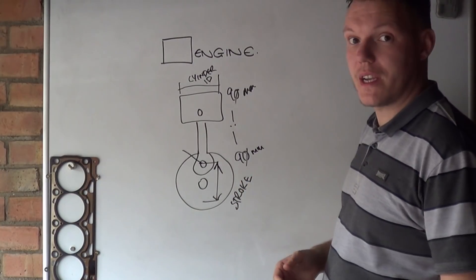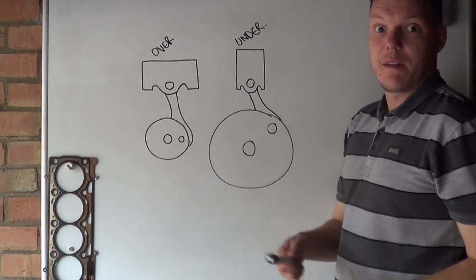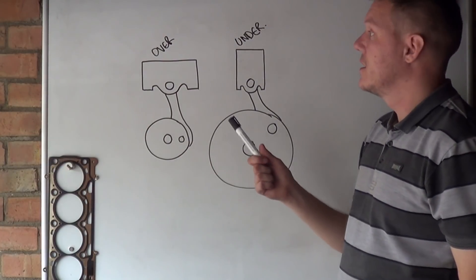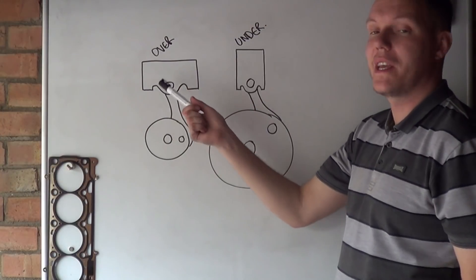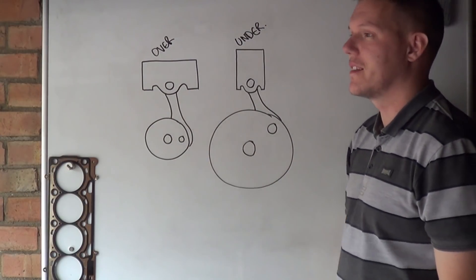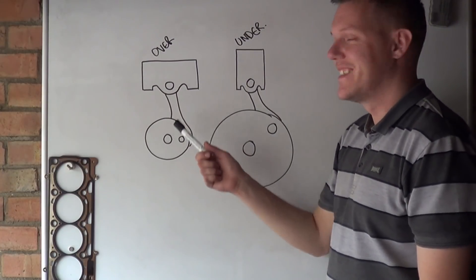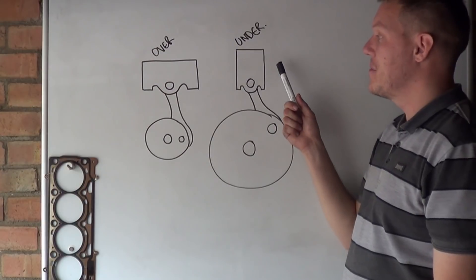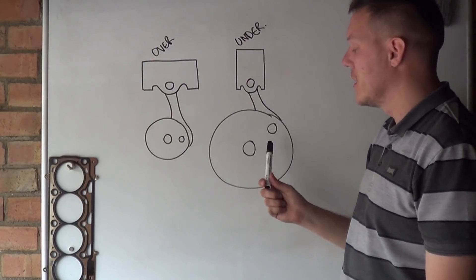So this is an example of an over-square engine and an under-square engine. Over-square means that the piston diameter is bigger than the stroke, and under-square means that the piston diameter is smaller than the stroke.